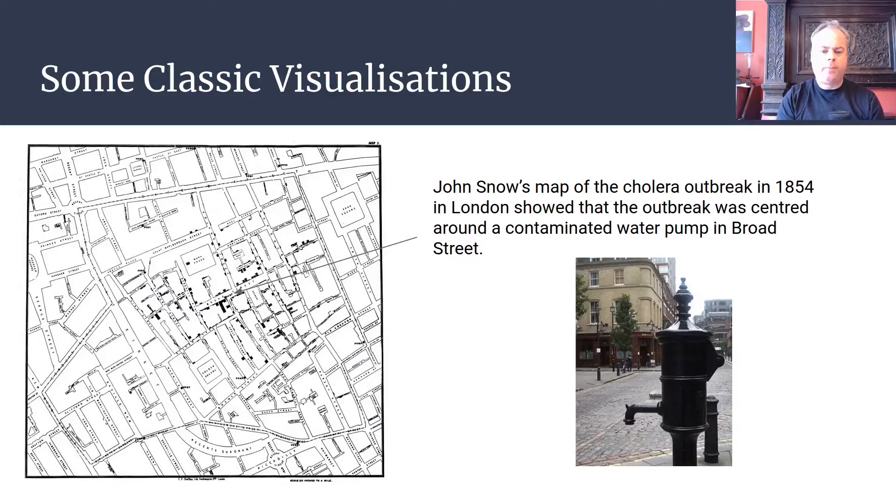This one from the mid-19th century is very famous. This is John Snow's map of the cholera outbreak in London in 1854, which was all centered around a contaminated water pump here in Broad Street. You can see all of these black squares corresponding to cholera cases, and you can see at the center is this pump here.